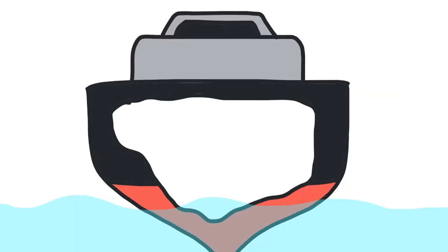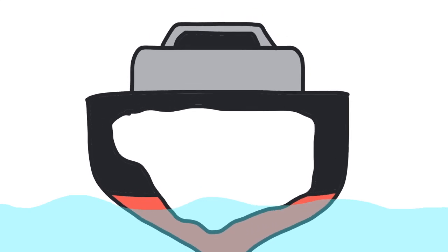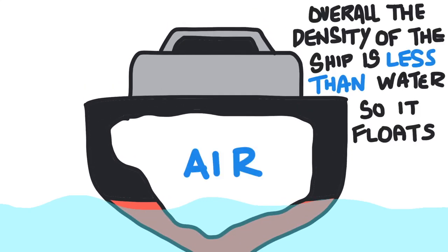So to get back to our ship — even though the ship is made of metal, its shape spreads out the weight over a larger volume. There's a bunch of air inside the ship. Overall, the density of the ship is much less than water, so it floats.